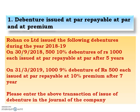Rohan Company Limited issued the following debentures during the year 2018-19. On 30th September 2018: 500 debentures, 10% debentures of rupees 1000 each, issued at par and repayable at par after five years. On 31st March 2019: 1000 debentures, 9% debentures of rupees 500 each, issued at par and repayable at 10% premium after seven years. Please enter the above transactions in the journal of the company.